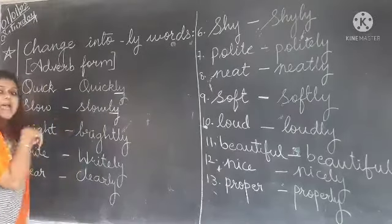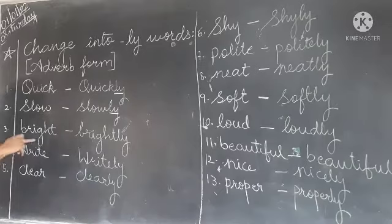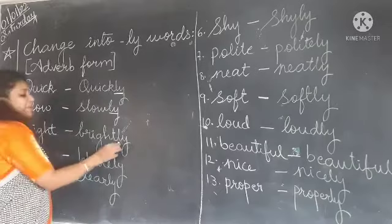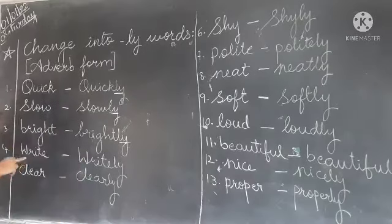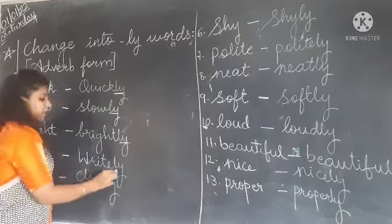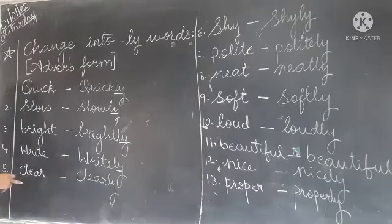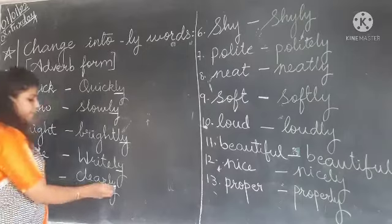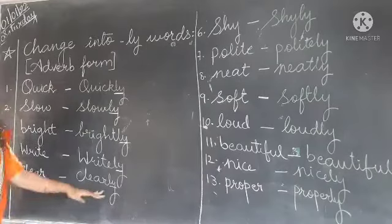You add LY to make the adverb. Next, Bright — the adverb form is Brightly. Then Clear — C-L-E-A-R. The adverb form is Clearly.